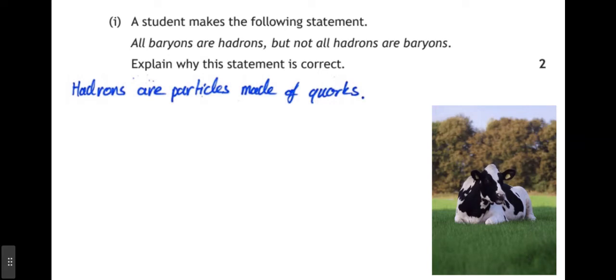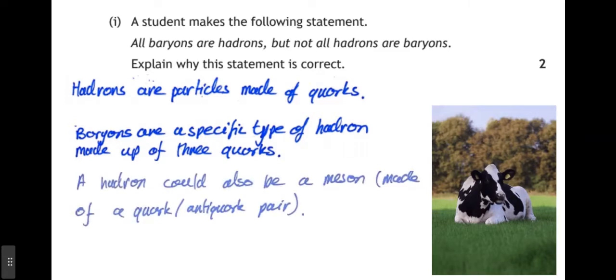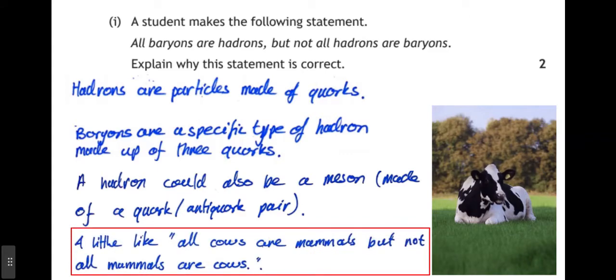Hadrons are a generic umbrella term for all particles which are made of quarks, in the same way that mammals are all animals which give birth to live young. Baryons are a specific type of hadron, and they're made of three quarks, in the same way that a cow is a specific type of mammal. But there are other types of mammals, in the same way that there are other types of hadron. So a hadron could also be a meson, for example, which is made up of quark-anti-quark pair.